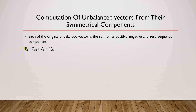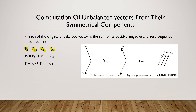Based on that statement we can write: VA = VA0 + VA1 + VA2, where VA0 is the zero sequence component, VA1 is the positive sequence component, and VA2 is the negative sequence component of phase A. Similarly we can write the same equations for phase B and phase C.